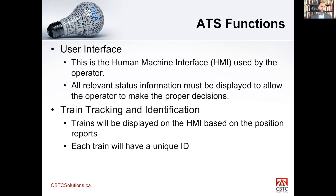User interface — this is the human machine interface, or HMI, used by the operators. It's a GUI-based graphical user interface and all relevant information is displayed on the screen. IEEE specifies that certain information must be available to operators — line overview, stations, trains, etc. — to allow the operator to make proper decisions when operating the system.